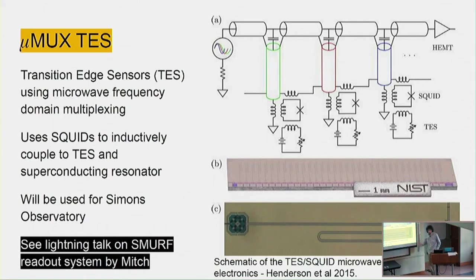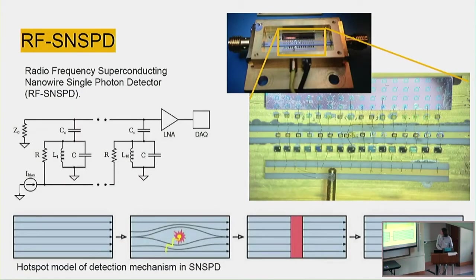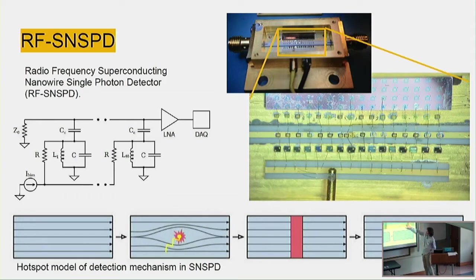If you're designing a readout system for MKIDs, with slight modification it could be used for mu-mux TES as well. I also took an LNA box and some superconducting nanowire single photon detectors with low noise amplifier surface mount components from Hamdi-Mani, and we ended up actually making a multiplexed array of these. They're really fun detectors to use, and hopefully we can use them for intensity interferometry.